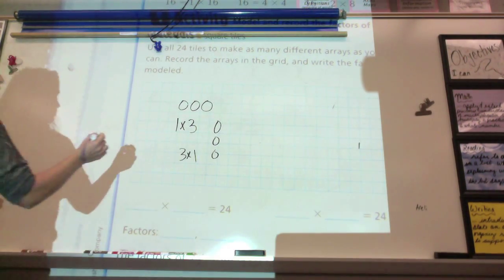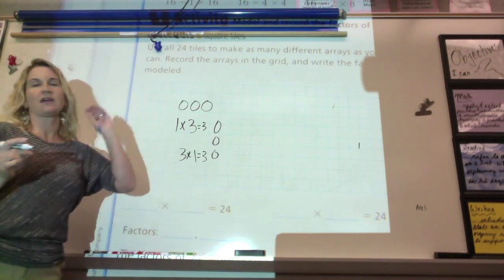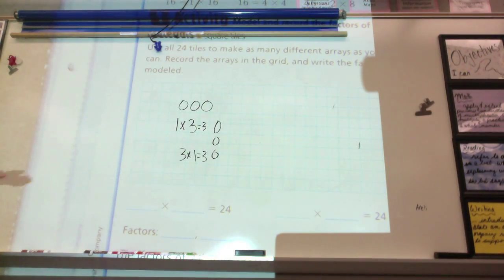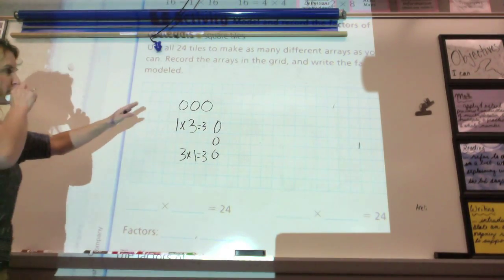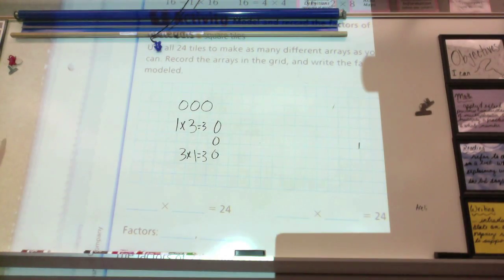If I want my product to be 3, can I use any other combination of numbers? I want my product to be 3. That means I have to be multiplying. What do you think, Jalen? No. No. So, in this case, it's just 3 and 1. That's the only array I can make up.